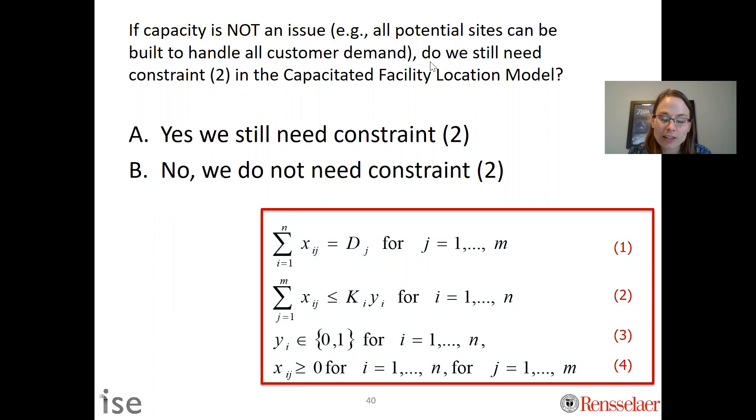As a reminder, constraint two is given here. Constraint two basically says you sum up the xij's, which is the amount shipped from i to j or produced from i to j, and for each location i, I only have so much capacity and that's turned on by this yi, which is one if I build, zero if I don't.